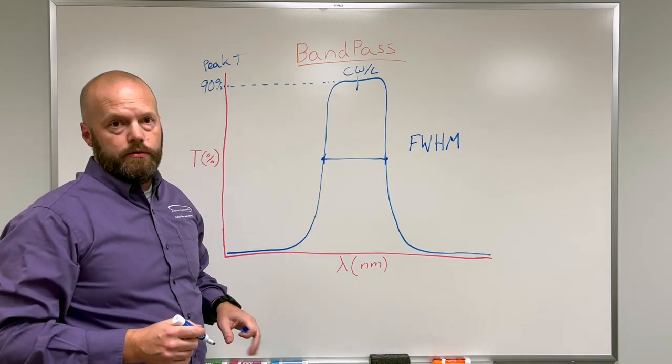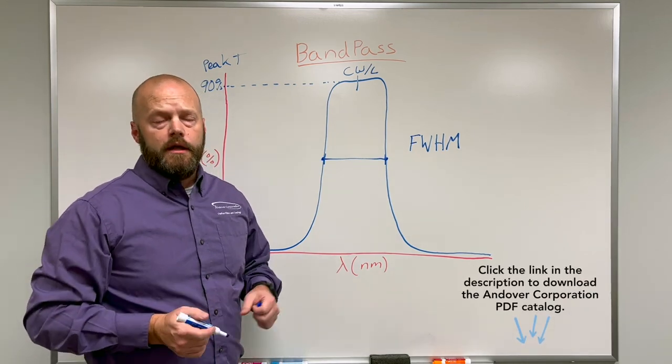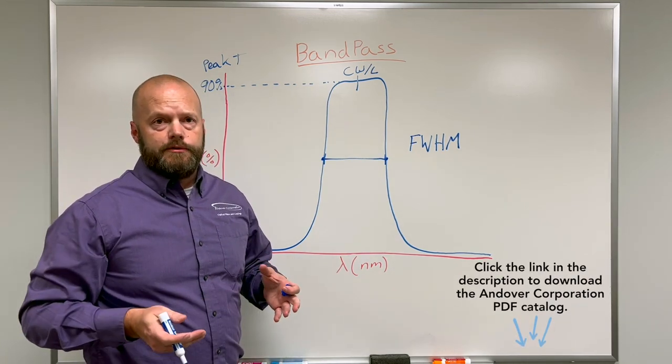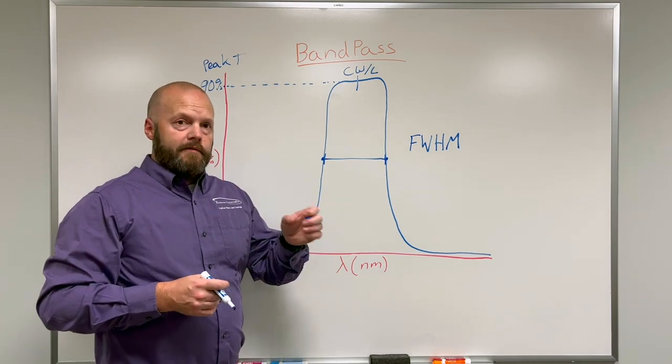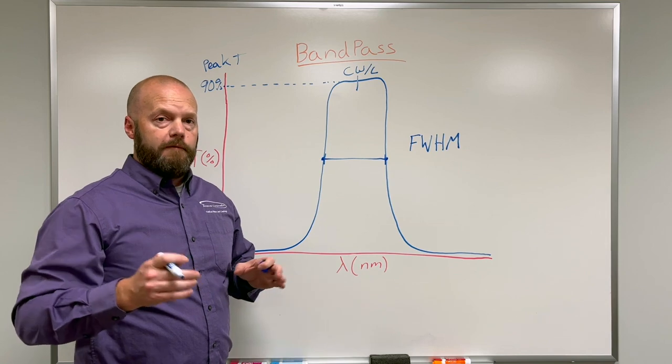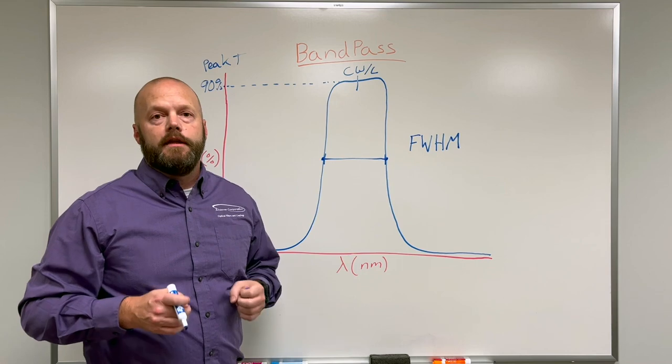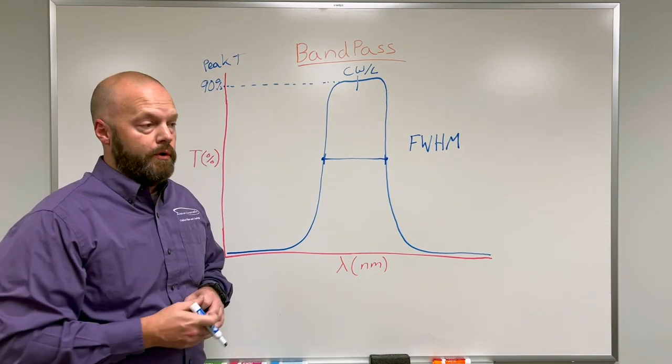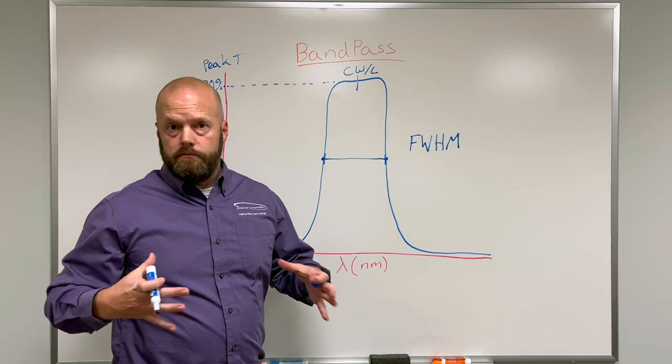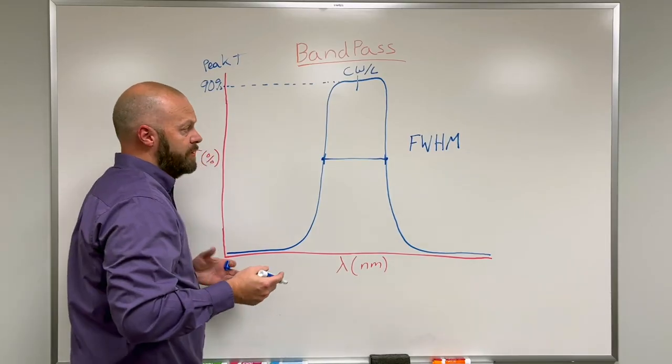That's the basic look of a bandpass filter, but there can be many shapes. In the Andover Corporation catalog around page 13 or 14, we've labeled filter types 1 through 6, being one cavity, two cavity, three, four, five, and six, and then also filter type 7, 8, 9, and 10, which are MDM type filters or metal dielectric metal.